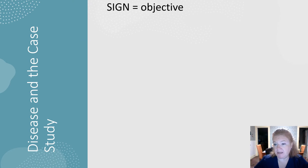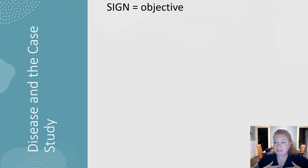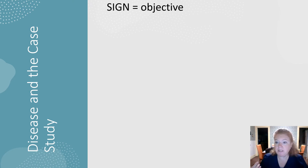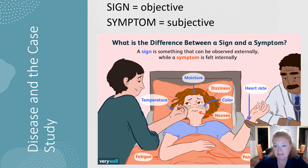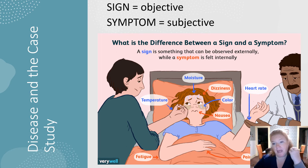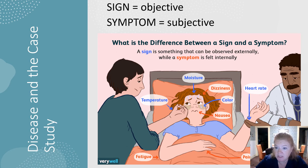A sign is objective — I can feel your pulse rate, listen to your lungs and hear wheezing, measure your body temperature, see a rash or bleeding, or use an x-ray to check a broken bone. A symptom is subjective, meaning there isn't always a way to verify it. Both are valid in making a diagnosis, but a sign is objective and a symptom is subjective.